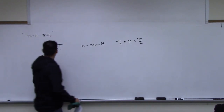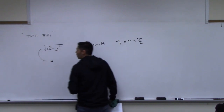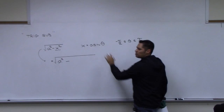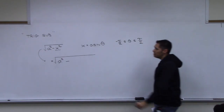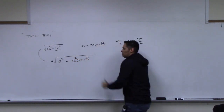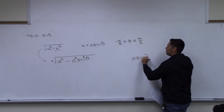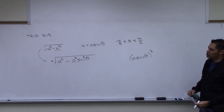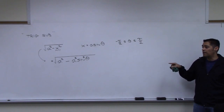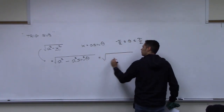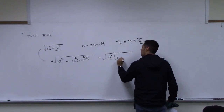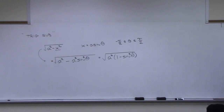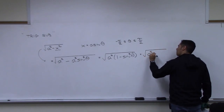Let's take the expression √(a²−x²) and replace x with a sine theta. We get √(a² − a² sin²θ). Both terms have a² in common, so factor it out, leaving √(a²(1 − sin²θ)). Since 1 − sin²θ = cos²θ, this becomes √(a² cos²θ) = a cosine theta — technically an absolute value, but positive given our domain restrictions.